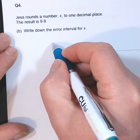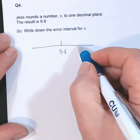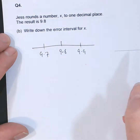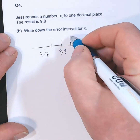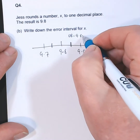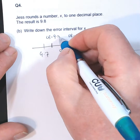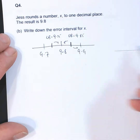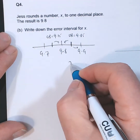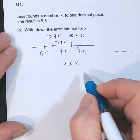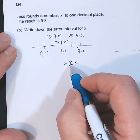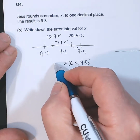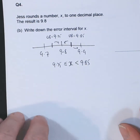This next example talks about rounding a number to one decimal place, with the result being 9.8. Drawing the number line out, the scale goes 9.7, 9.8, 9.9. The upper bound is halfway between 9.8 and 9.9, which is 9.85, and the lower bound is halfway between 9.7 and 9.8, which is 9.75. So the error interval is: 9.75 ≤ x < 9.85.